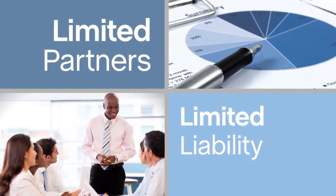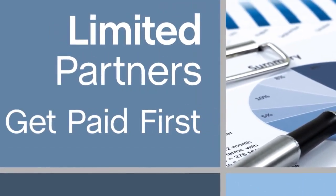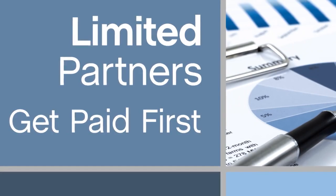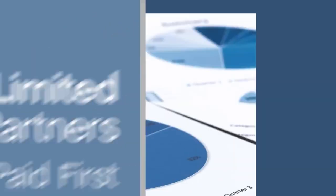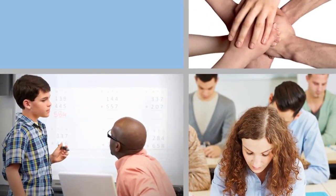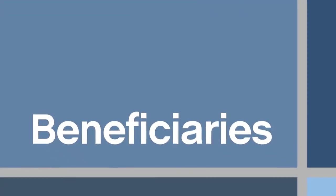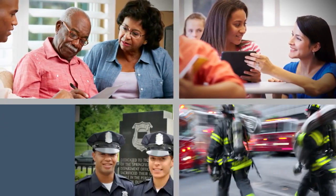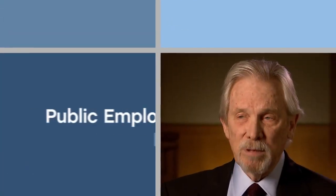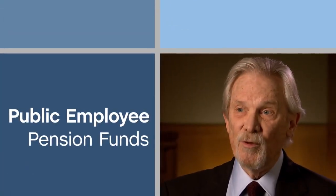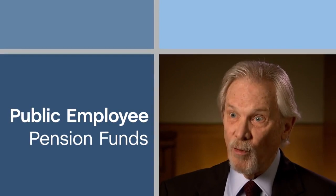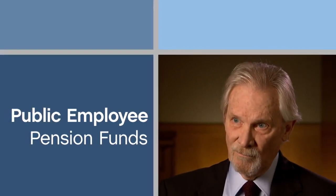The private equity investor has to first return the capital and then the capital gains and the improved value to the limited partners. They are generally pension funds, university endowments, endowments of charities, and wealthy families who have a pool of capital to invest. The beneficiaries are people like retirees, teachers, firemen, and policemen. The public employee pension funds are the biggest part of the investment pool and the capital will get invested in private equity.